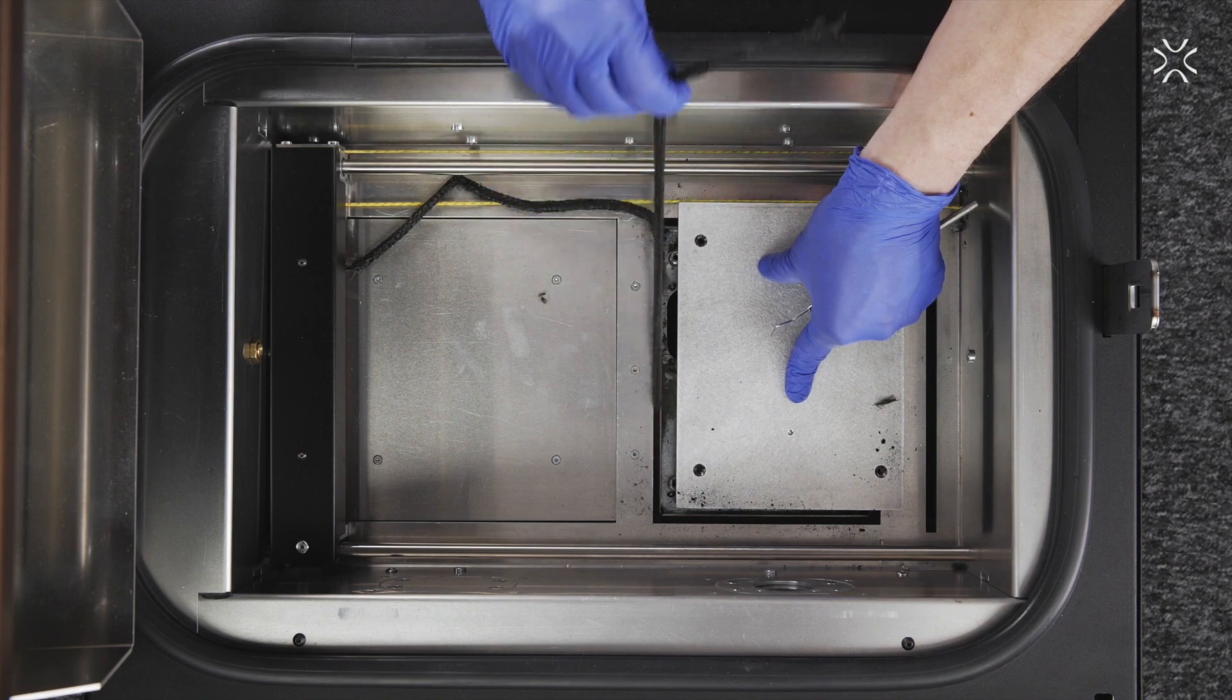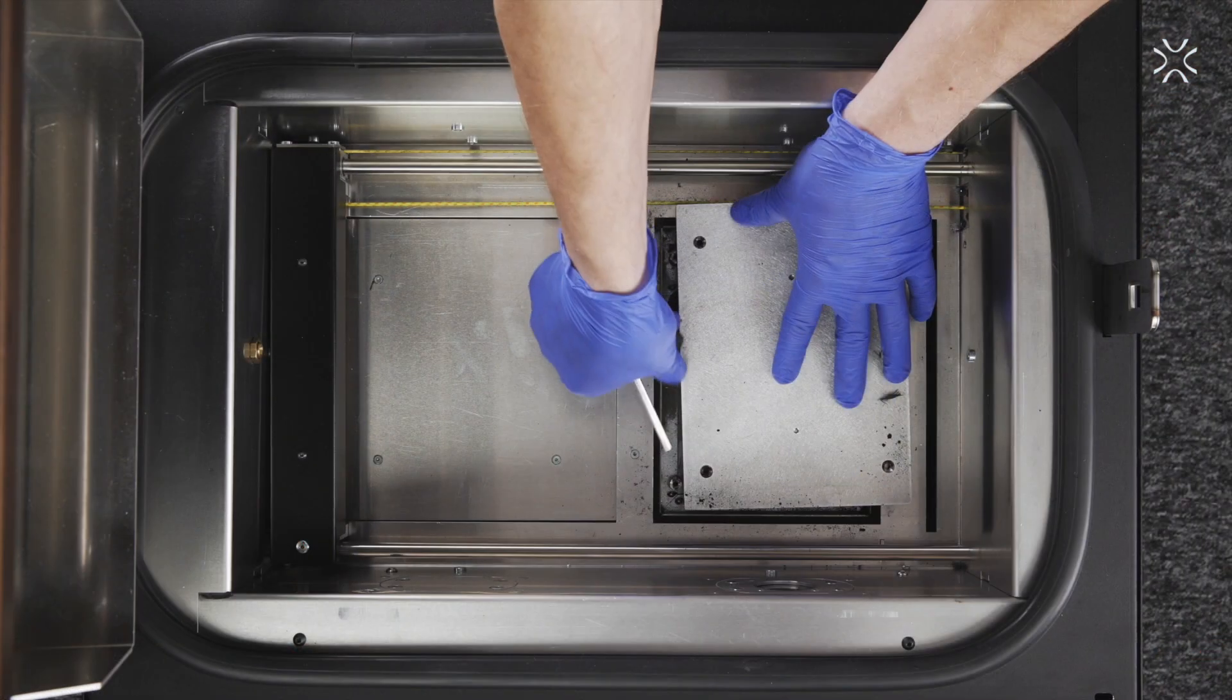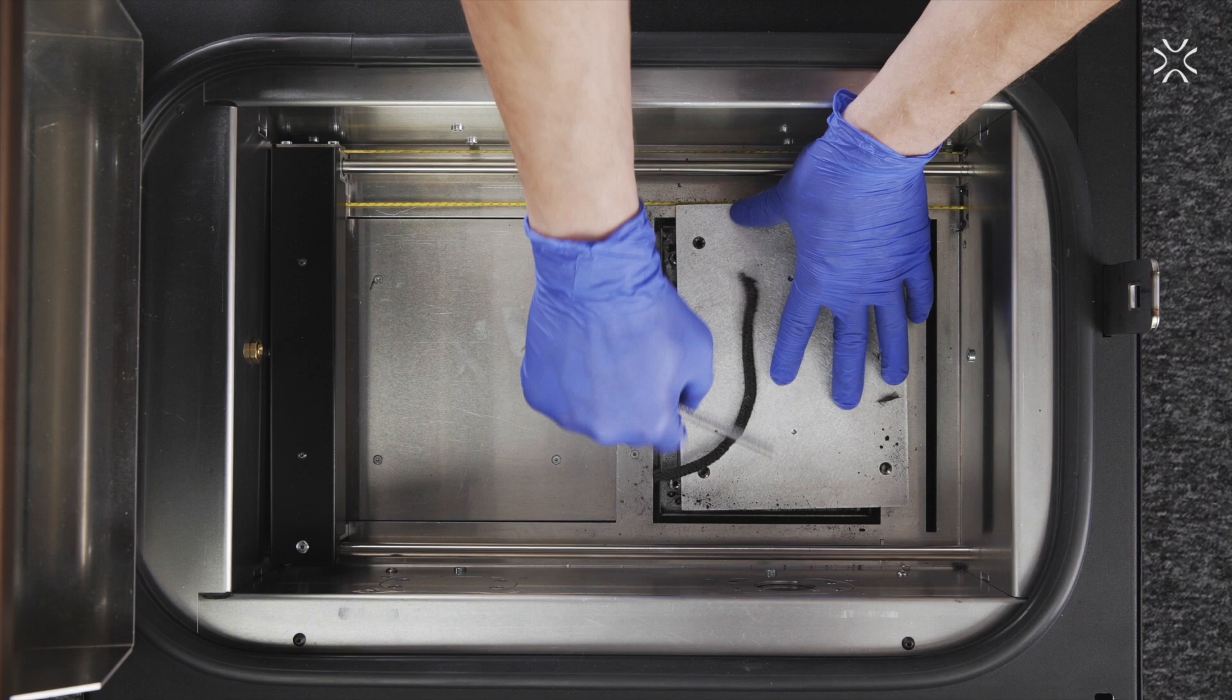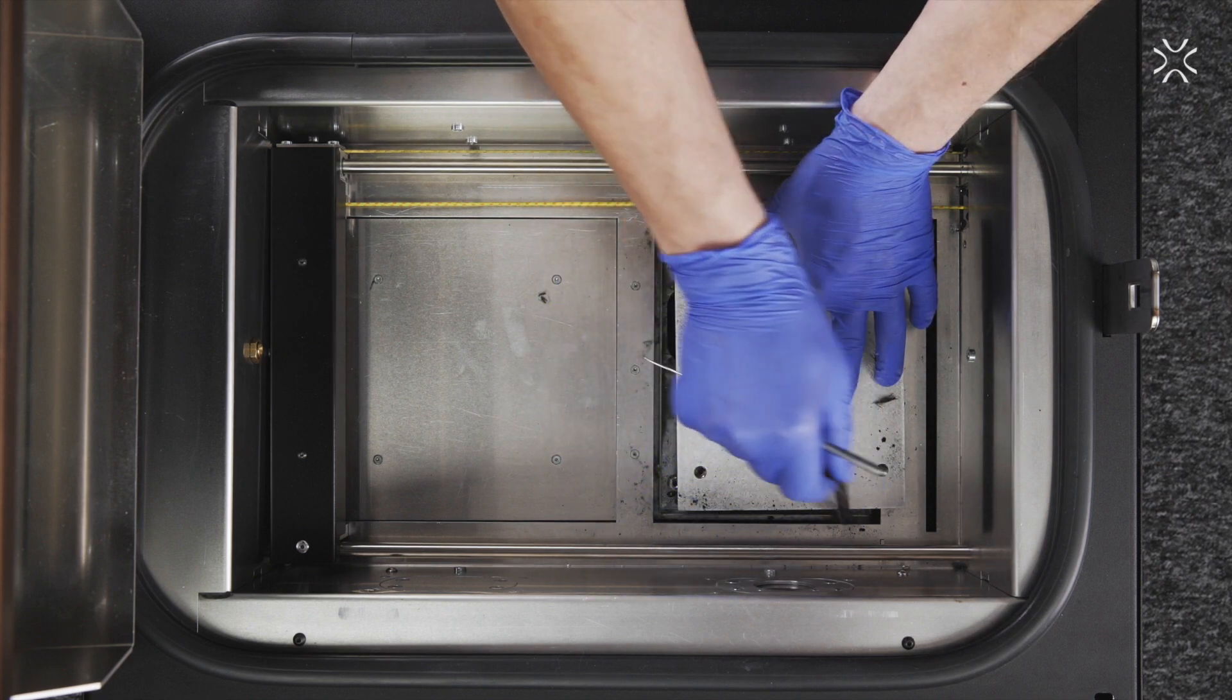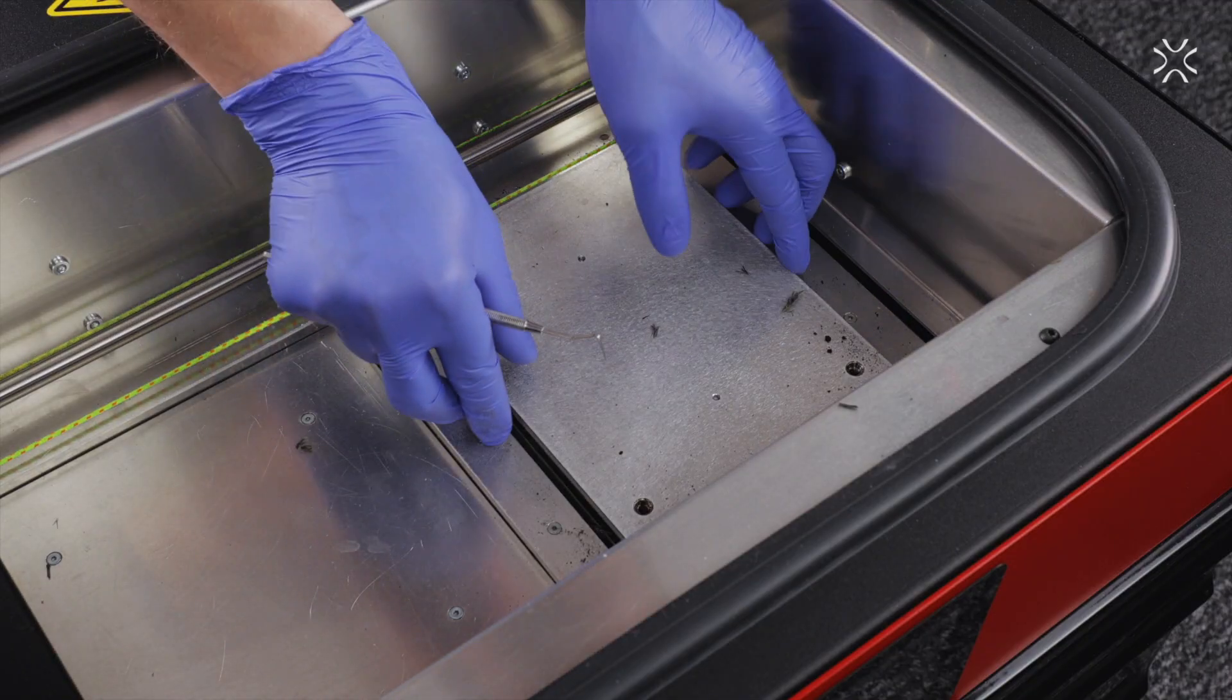There is a specific order of layers when installing the new print bed insulation. The first layer consists of four fiberglass ropes. The other two layers, one long fiberglass rope each.